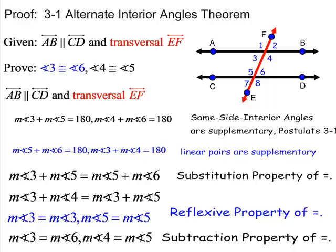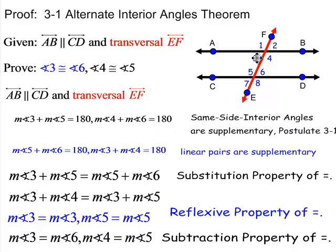Now let's look at a proof for the alternate interior angles theorem. When you see the word theorem, that means we can prove it. A postulate is a rule we have to accept, and a theorem is something proven from previous information. We're given that line AB is parallel to CD with transversal EF, and we're supposed to prove that the alternate interior angles are congruent. By the same-side interior angles postulate, angle 3 and angle 5 are supplementary, and angle 4 and angle 6 are supplementary.